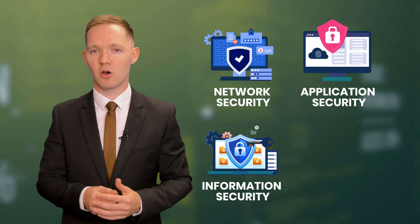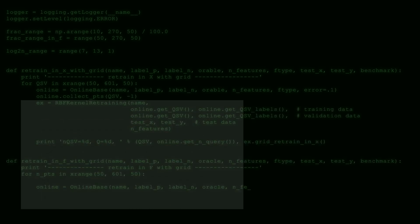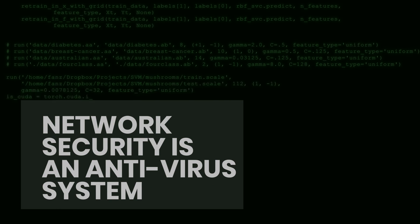Now that you know what cybersecurity means, let's talk about a few of the different types of cybersecurity. Let's discuss network security first, as it's often the first thing people think about when they hear the word cybersecurity. Everything's online nowadays, and chances are you spend most of your time online as well. Network security refers to the protection of computer networks and network-accessible resources. Network security is essential because it protects you from any type of unauthorized intrusion, including malicious insiders. A basic example of network security is an antivirus system.